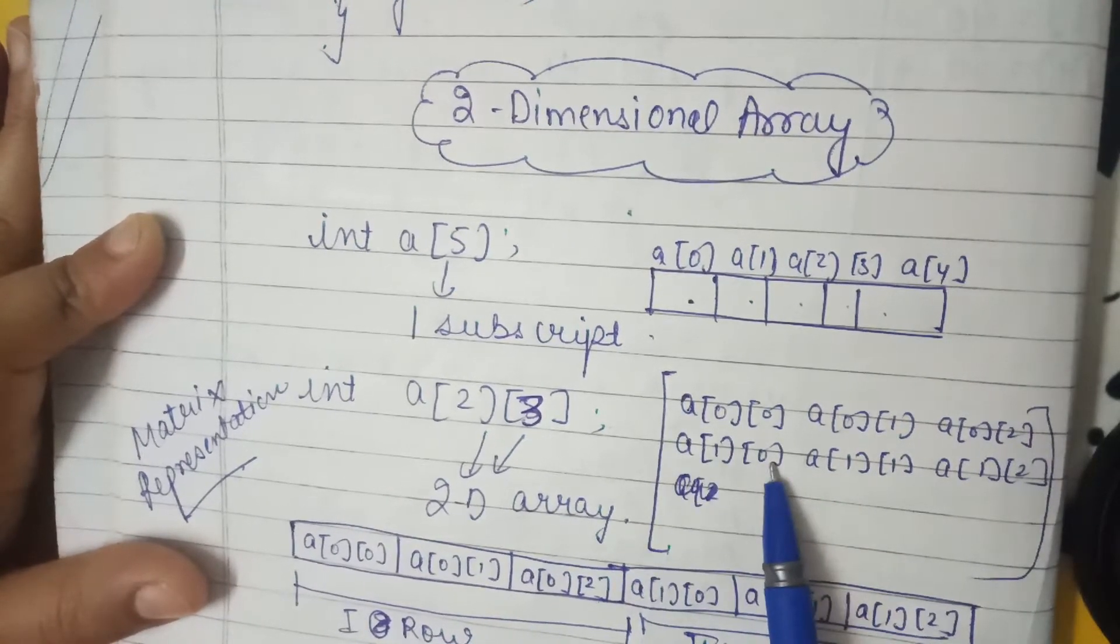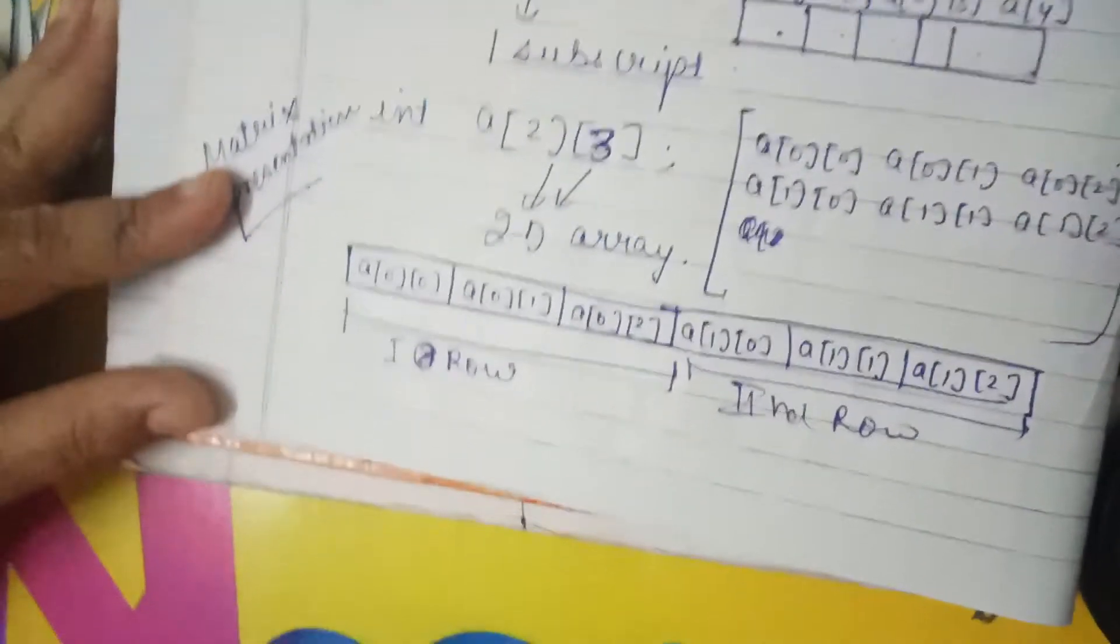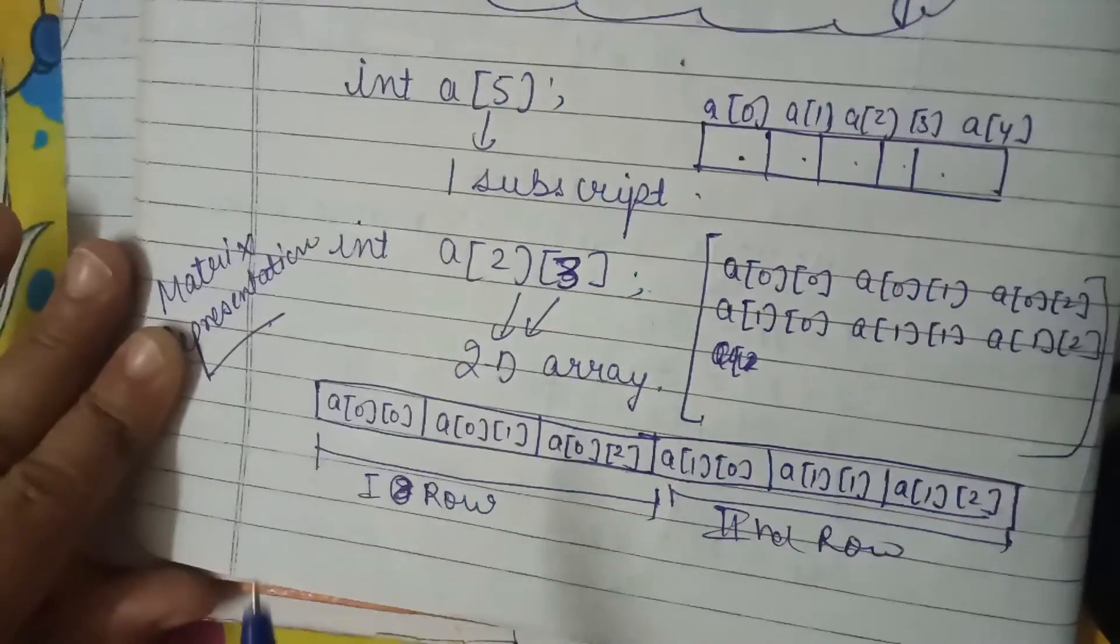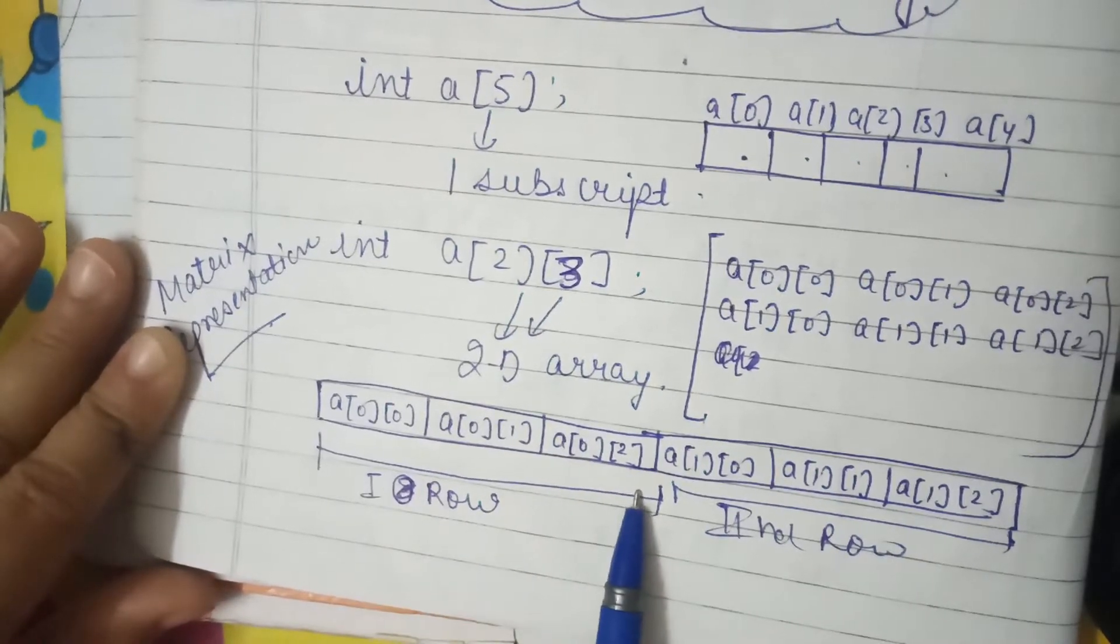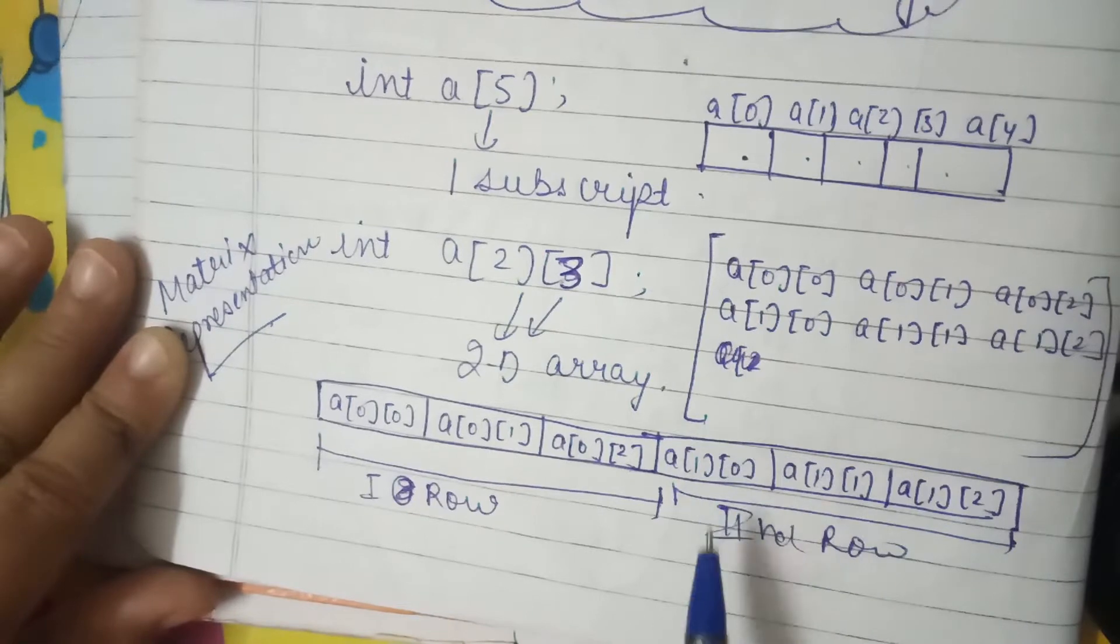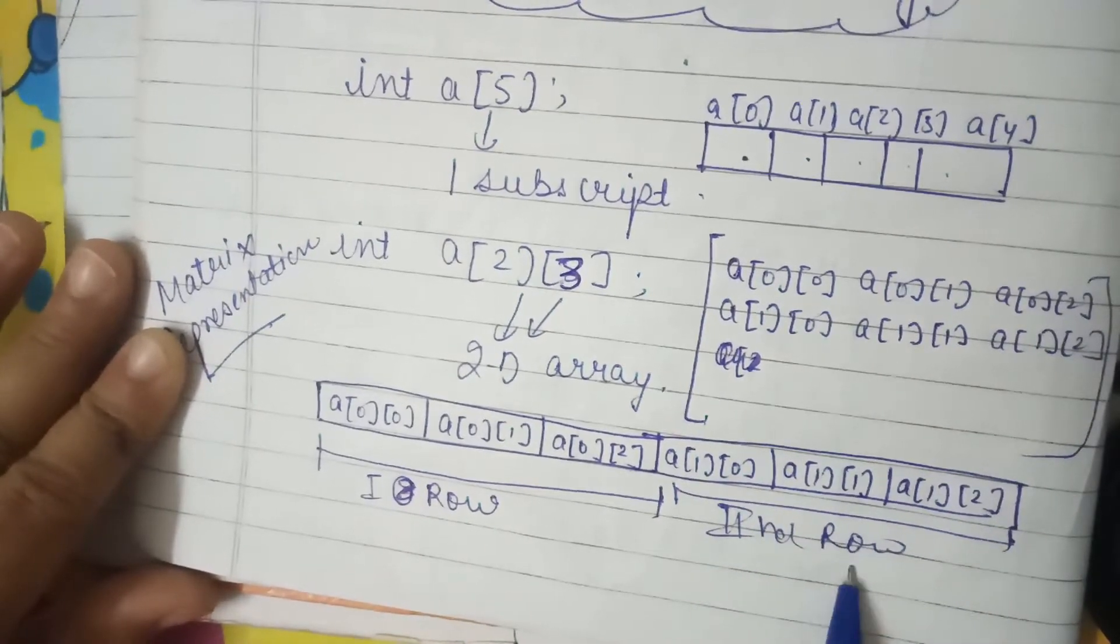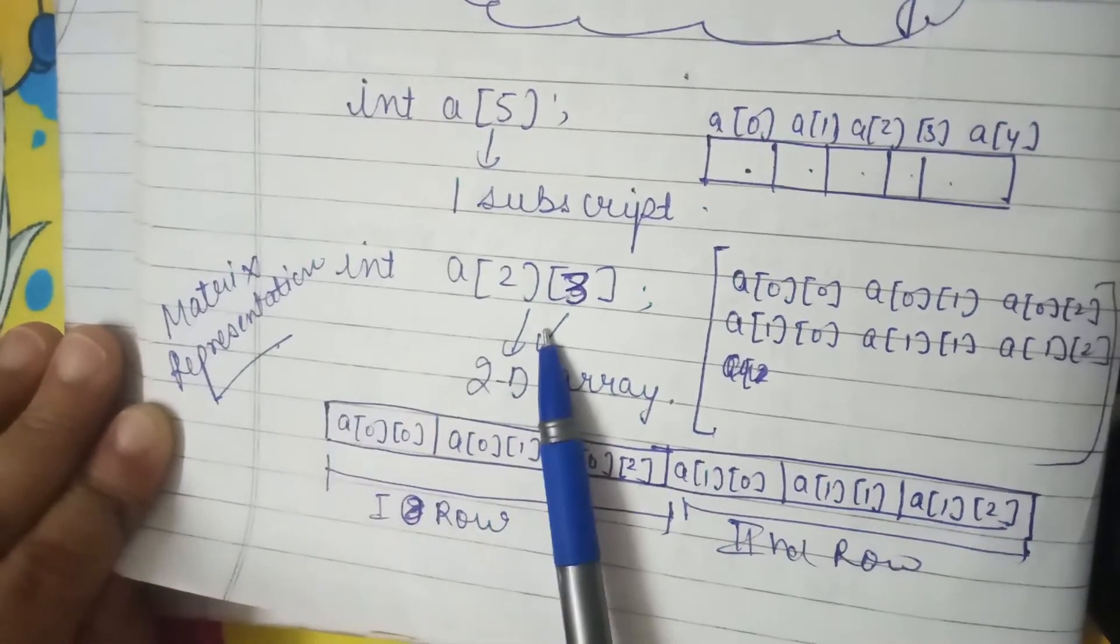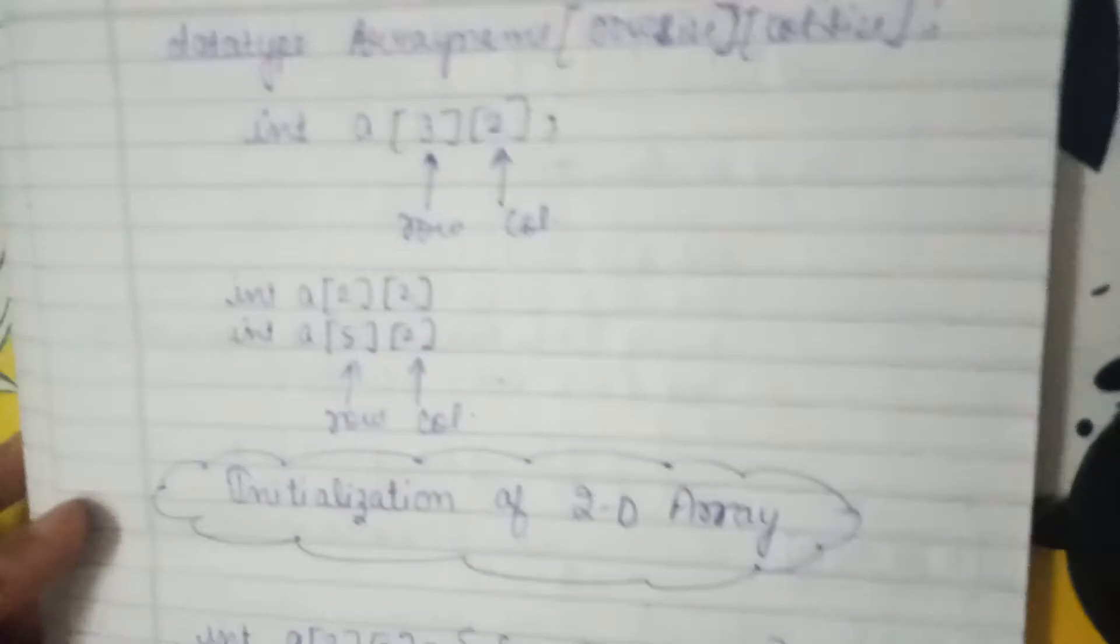Like starting the representation: a[0][0], a[0][1], a[0][2] represents first row. Then a[1][0], a[1][1], a[1][2] represents second row. This is the matrix representation we can see, where we show the rows and columns. Now we will see declaration of 2D array.